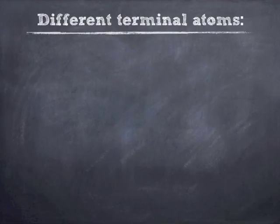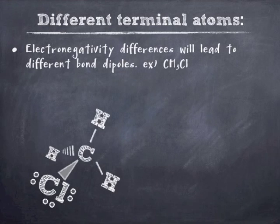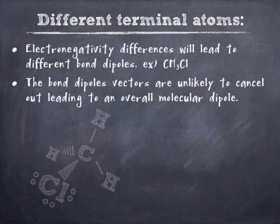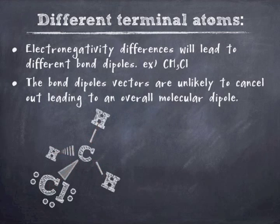If you have different terminal atoms, you're going to have a polar molecule. Because it's going to lead to different bond types, and that's going to lead to different dipole vectors. For the instance of chloromethane, you're going to have a slightly different polarity of those bonds. And that's going to lead to an overall molecular dipole. If we were to show where the dipoles go for each one of those bonds, carbon is more electronegative than hydrogen, but chlorine is more electronegative than carbon. And so that's going to lead to an overall dipole pointing towards chlorine. It's not going to be much, but it's going to be enough to give this some polar characteristics. The chlorine is going to be partially negative, and the rest of the molecule will be partially positive.